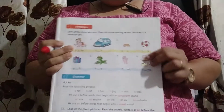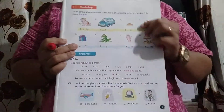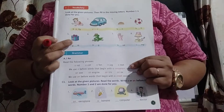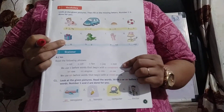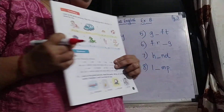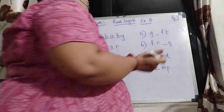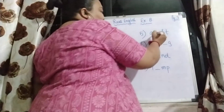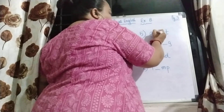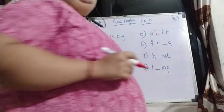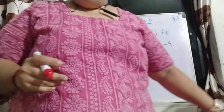Number 5 — this is a gift. It's G-I-F-T. Gift.